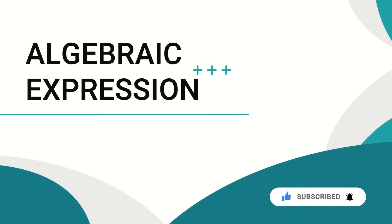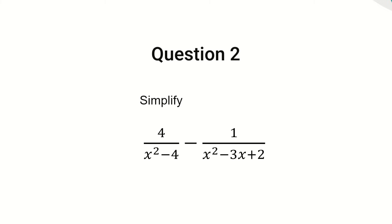Now let's consider the question. The question says that we should simplify an expression with numerator 4 and denominator x squared minus 4, then minus an expression with numerator 1 and denominator x squared minus 3x plus 2.